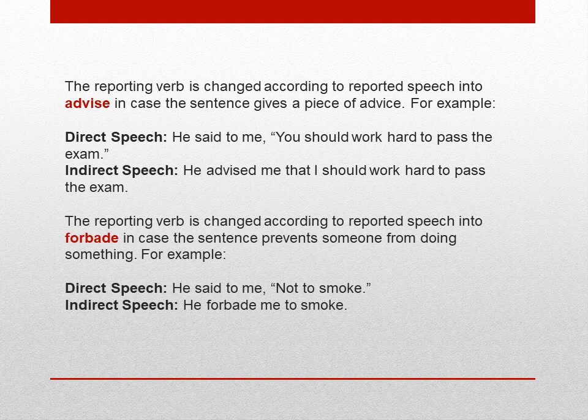If the sentence is giving advice, the example will be: Direct — 'He said to me, you should work hard to pass the exam.' Since it is advice, in indirect narration it changes into: 'He advised me that I should work hard to pass the exam.' Note that 'you' changes into 'I.' In case the reporting verb changes to 'forbid' — forbid means to prevent someone from doing something — for example: Direct — 'He said to me not to smoke.' Indirect — 'He forbade me to smoke.'